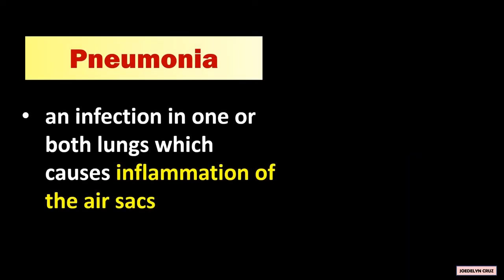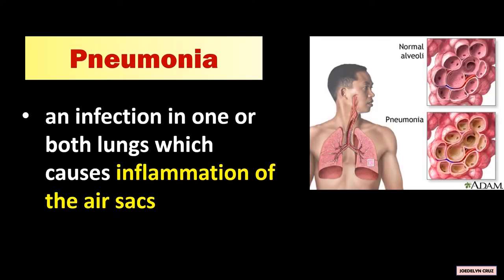Pneumonia is an infection in one or both lungs, which causes inflammation of the air sacs. In this picture, these are the normal alveoli, while these are the inflamed alveoli.